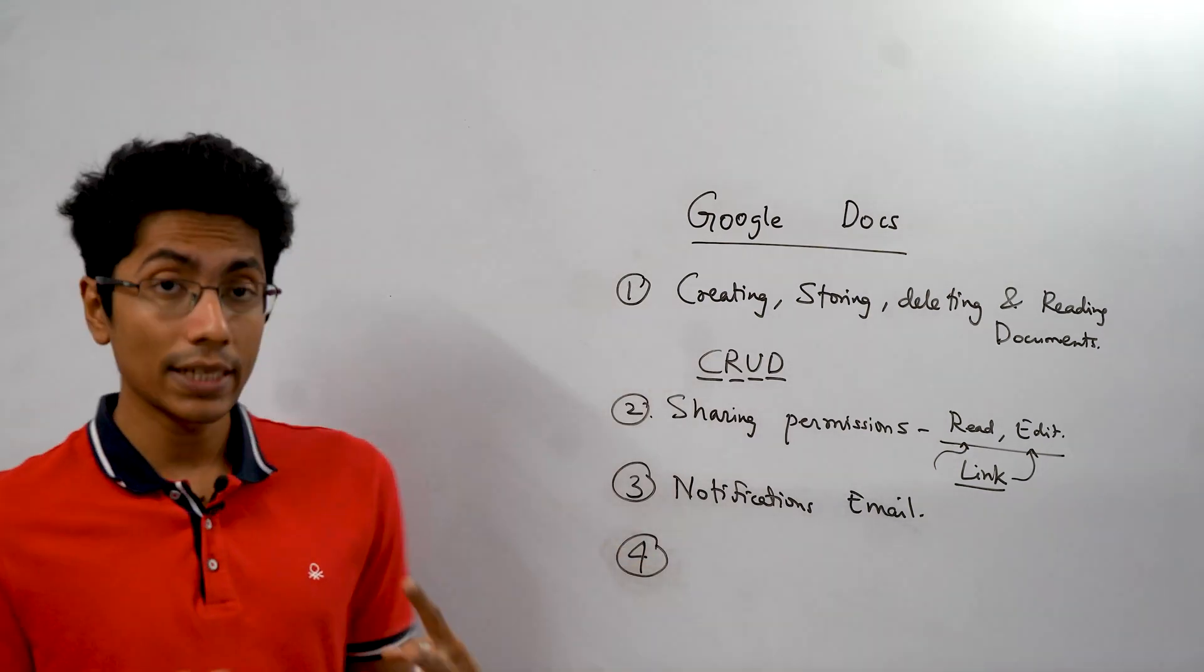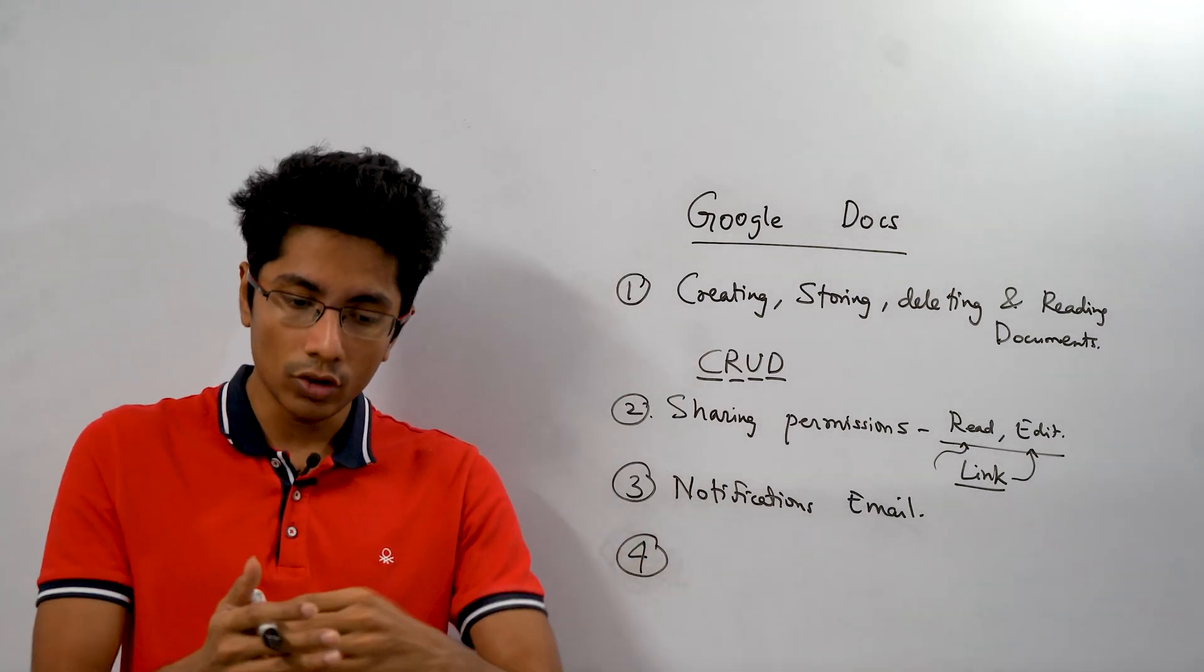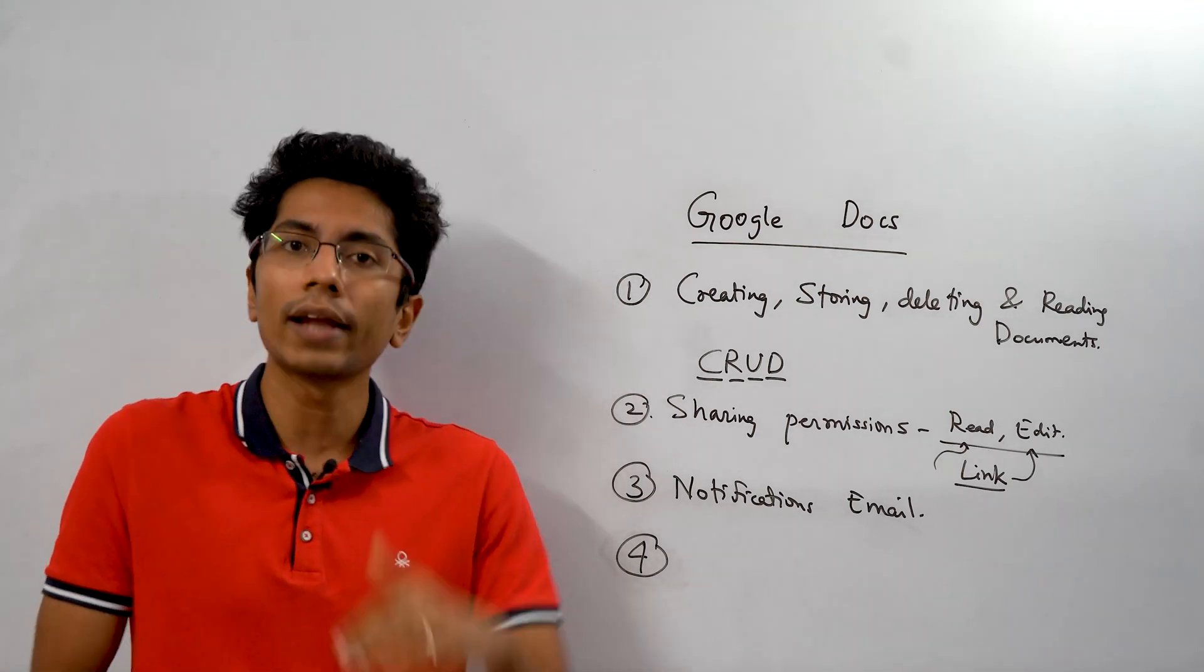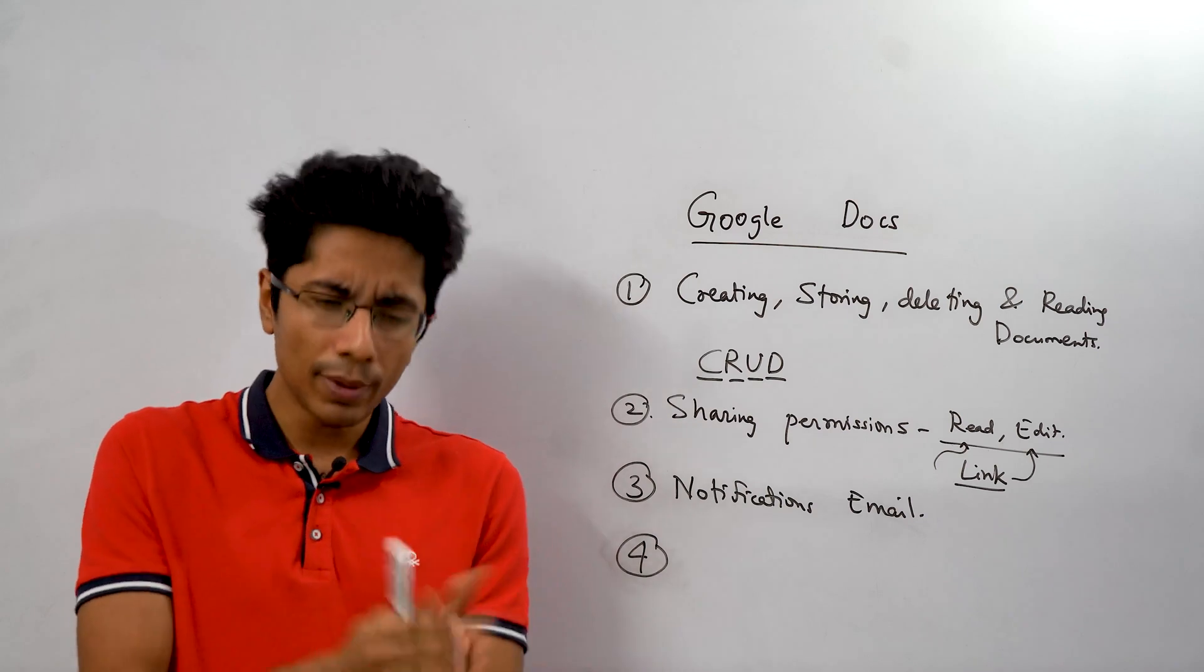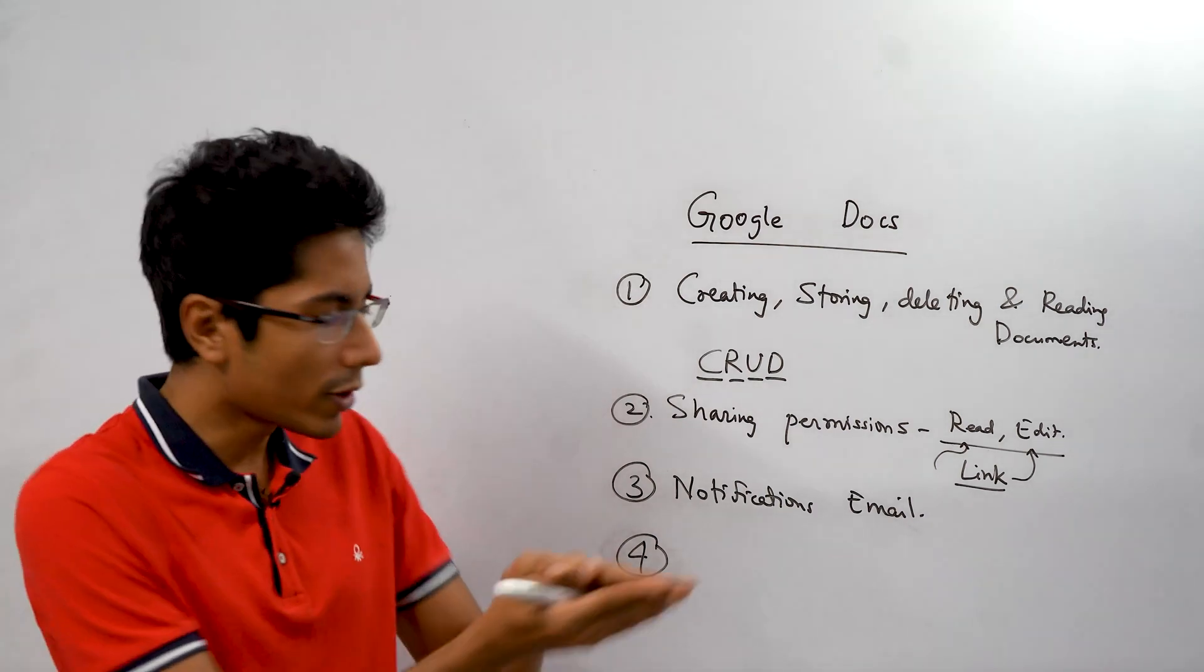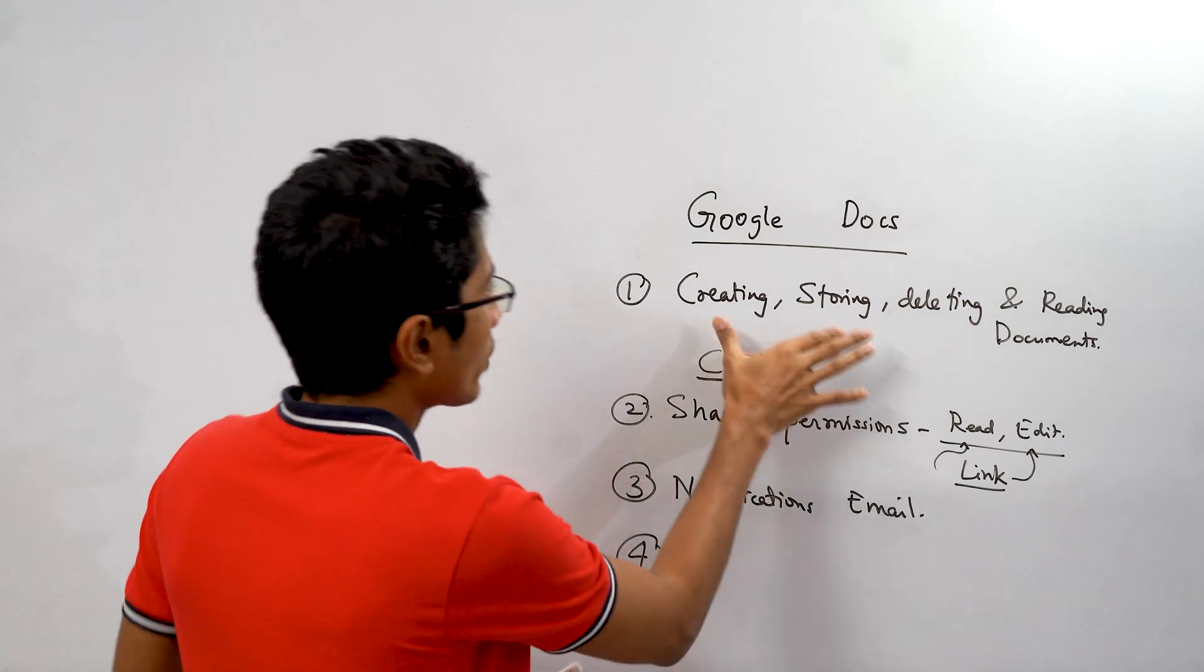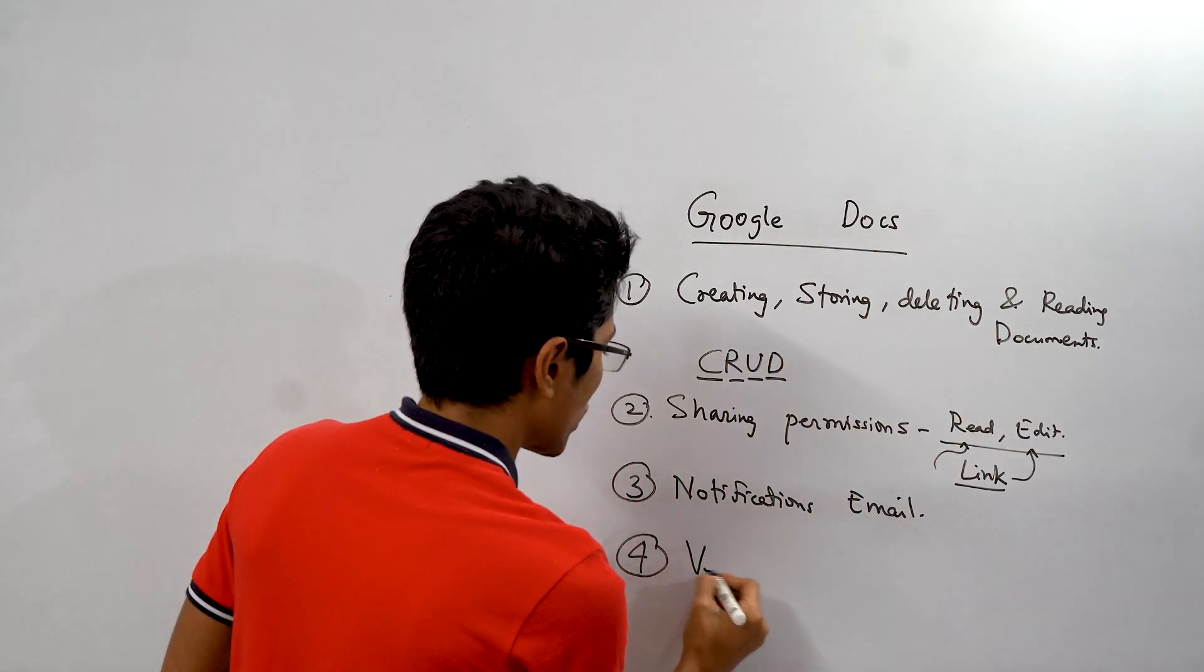The other thing about Google Docs is that you can store a document and go through its version history. So you can look at what the document looked like two days ago, one day ago, maybe a few hours ago also. So you have different versions of the document and you need to actually store these also. So you're not really storing just the documents, you're storing a version history.